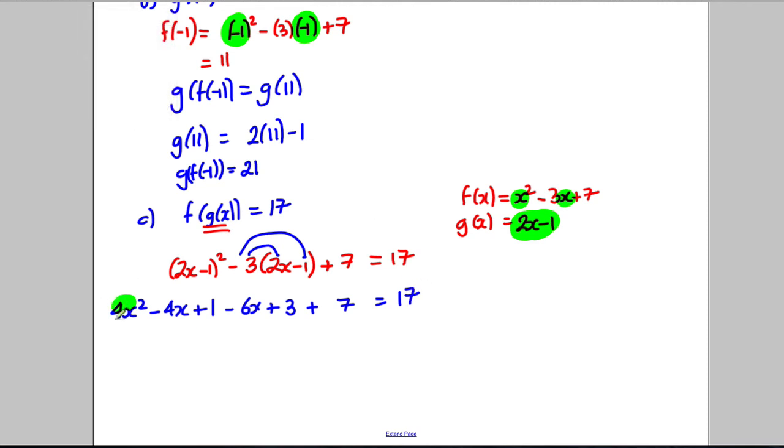Collecting like terms, so we've got a 4x² here and we've got -4x here and we've got -6x here, and we're going to collect numbers. We've got a 1, a 3, and a positive 7. So I have myself 4x² - 10x + 11 equals 17.